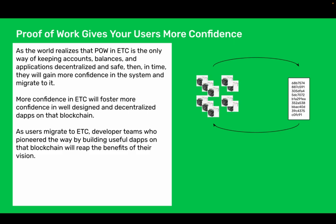Proof of work gives your users more confidence. As the world realizes that proof of work in ETC is the only way of keeping accounts, balances, and applications decentralized and safe, then in time they will gain more confidence in the system and migrate to it. More confidence in ETC will foster more confidence in well-designed and decentralized dApps on that blockchain. As users migrate to ETC, developer teams who pioneered their way by building useful dApps on that blockchain will reap the benefits of their vision.